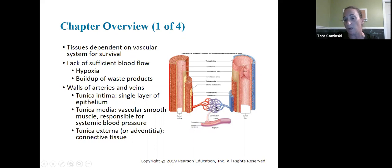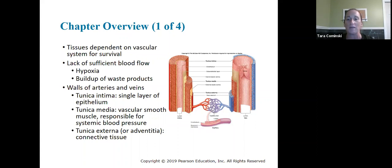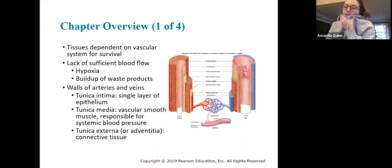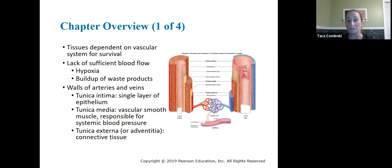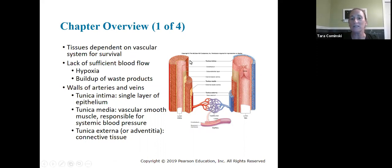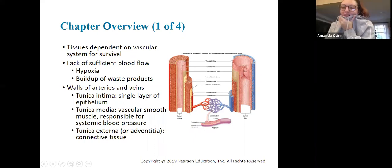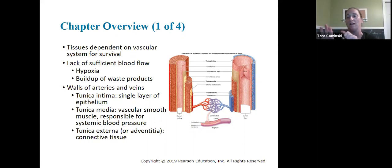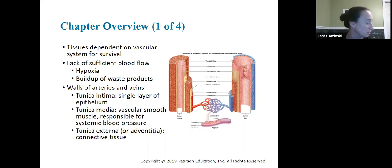Blood is then returned back to the heart through veins. If you look at the structure of arteries versus veins, the most noticeable differences are the thickness of the walls and the fact that veins have valves while arteries don't. Particularly, there is a much larger smooth muscle layer in arteries versus veins — that's the middle layer — and why is that? Why do arteries have this really thick smooth muscle layer compared to veins?